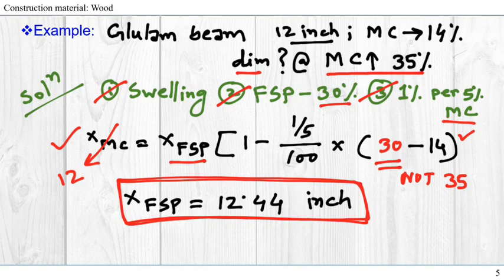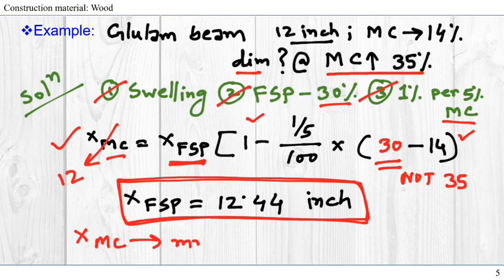Another advantage of this equation is that we don't have to worry about the dimension of XMC or XFSP. If this XMC is given in millimeter or inch or centimeter, the XFSP you will also get in the same dimension, in millimeter, inch, or centimeter, and vice versa.